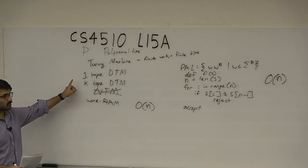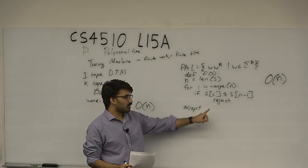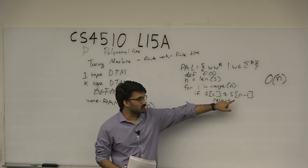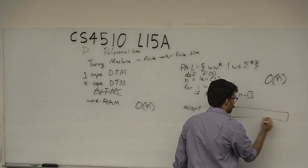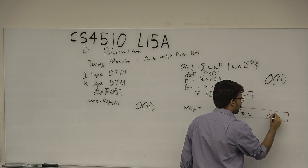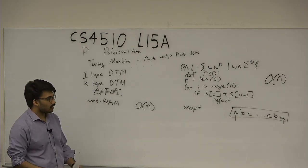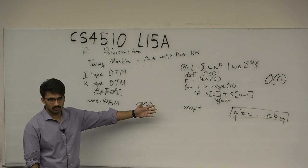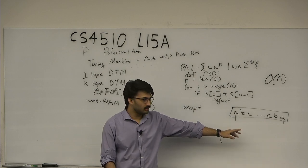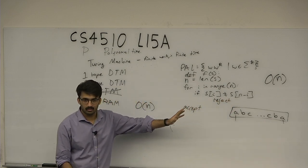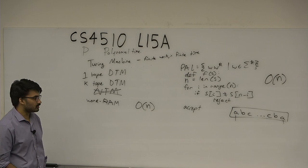When we talk about algorithms on variants of Turing machines, you can't use such high-level code. Here we're looking at the i-th element and also the n-minus-i-th element of the string. A Turing machine has a tape head, so it's not allowed to do that in one step. But a RAM machine can: it reads one value, jumps, reads the other, stores those in registers, performs a comparison. Let's consider algorithms on a k-tape deterministic Turing machine.